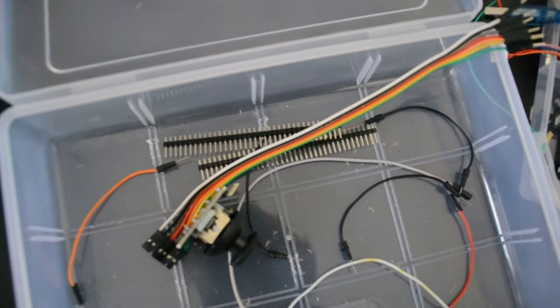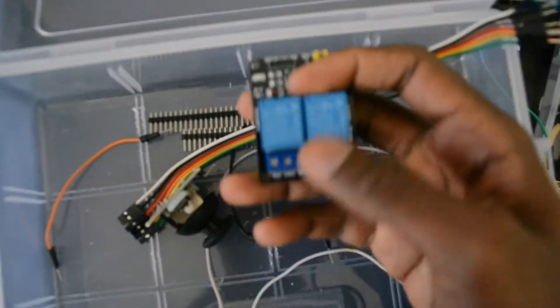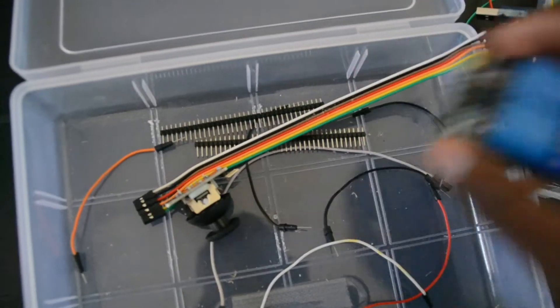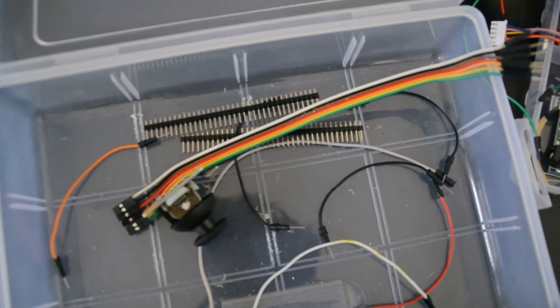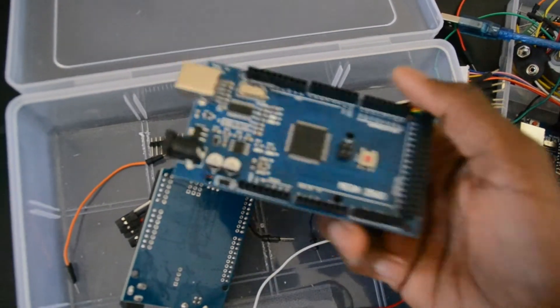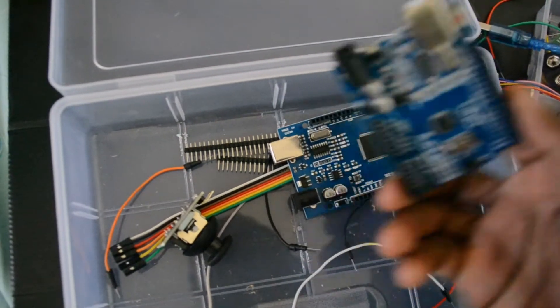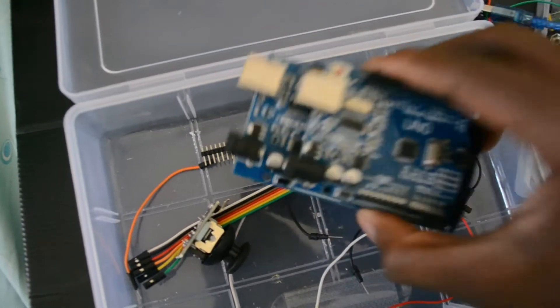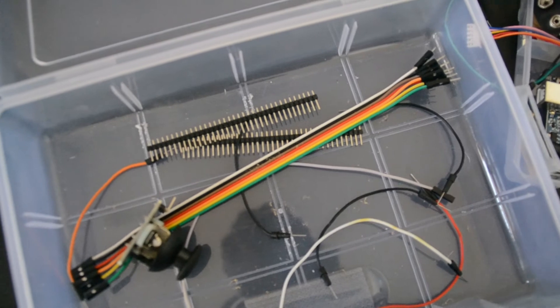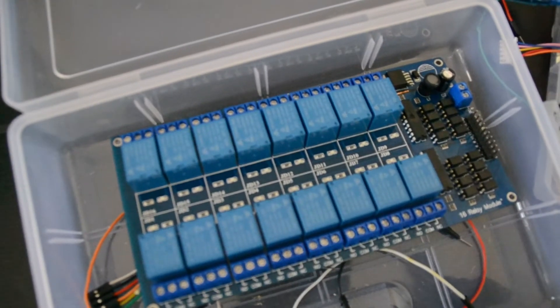Other pieces that I bought from the same store on Aliexpress are these two, two relay module, it works perfectly. Also I have these two Arduino Mega, also works perfectly. The Arduino Uno also works perfectly. I have been using these boards in my videos, and this 16 relay board also works perfectly.